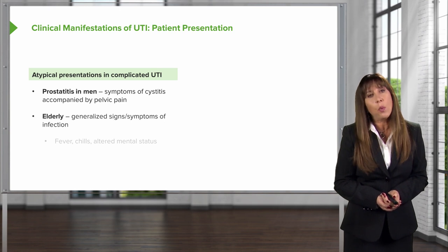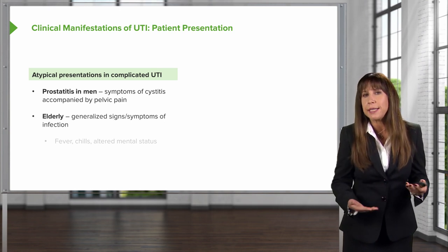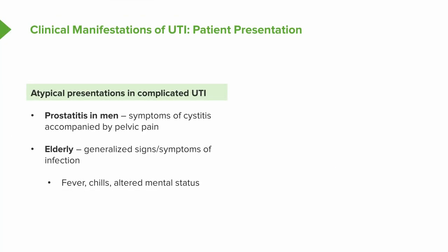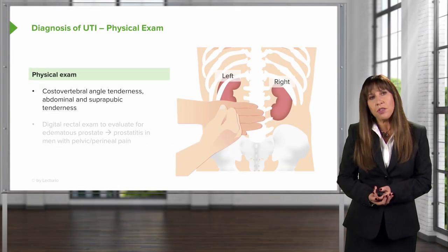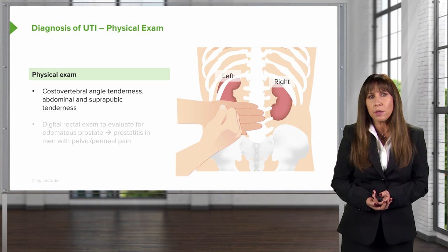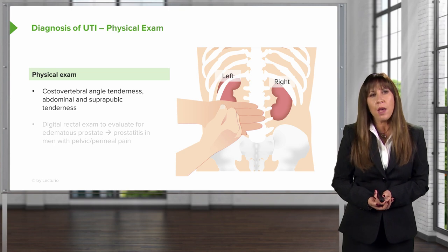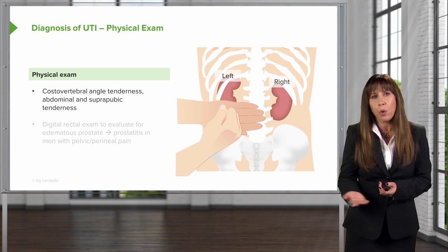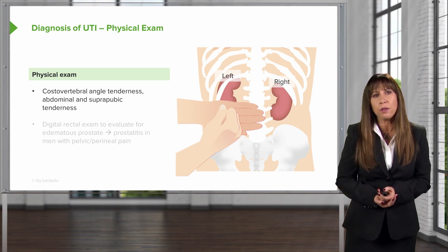In the elderly, we need to worry about more generalized signs and symptoms of infection. Things like fevers, chills, or altered mental status may be the way an elderly person presents. Based on our patient's clinical presentation that is suspect for UTI, we now look for physical exam findings that can help us with diagnosis.